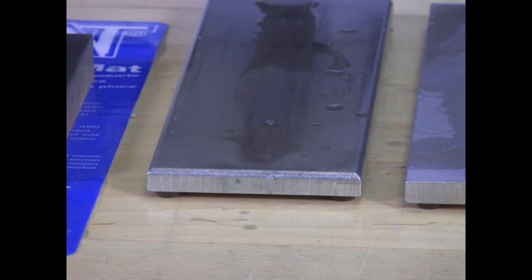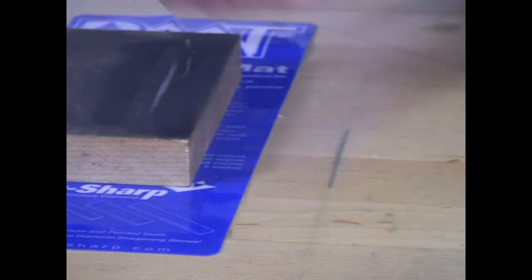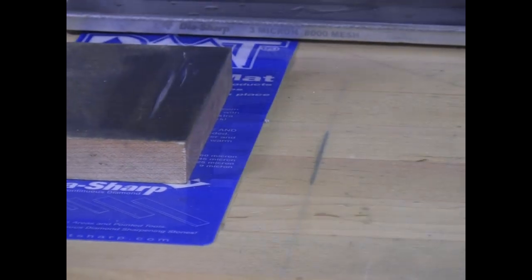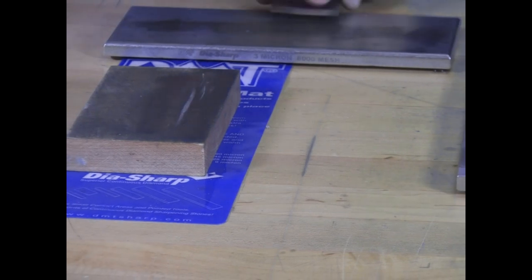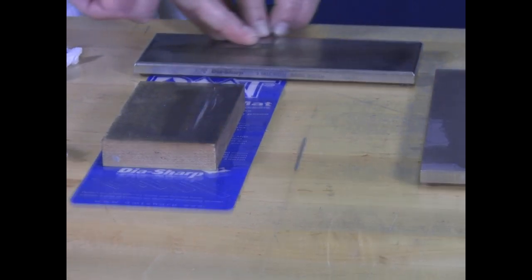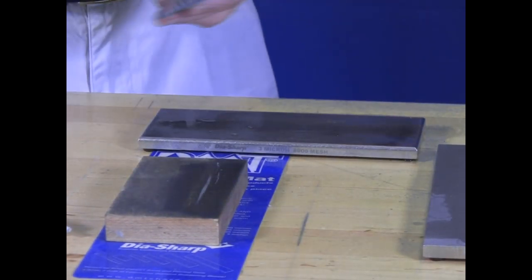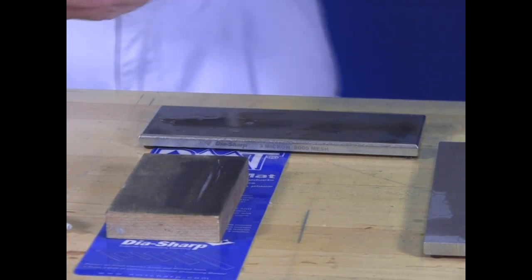And we'll go to the paste, but first let's take off that wire edge, if we have it. Just lightly, a couple of strokes, and that'll take it off and it won't ruin your polish either.